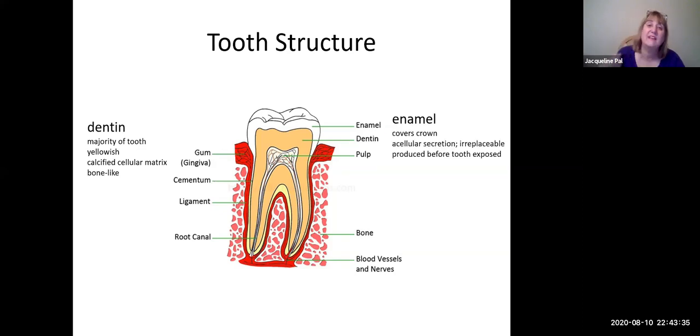Covering the dentin in the crown, on the exposed area, that's where you find enamel. This is not cellular, which means once it has been produced—and it's produced before the tooth reaches the gum line, so it's produced when the teeth are still in the maxilla and the mandible before they have erupted—once it is produced, it will never be replaced. So if you have some kind of accident or injury and you scrape the enamel off, you will never have enamel in that place again.